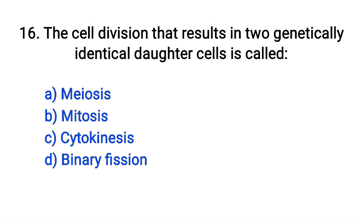Question number 16. The cell division that results in two genetically identical daughter cells is called: meiosis, mitosis, cytokinesis, binary fission. The right answer is option B: Mitosis.